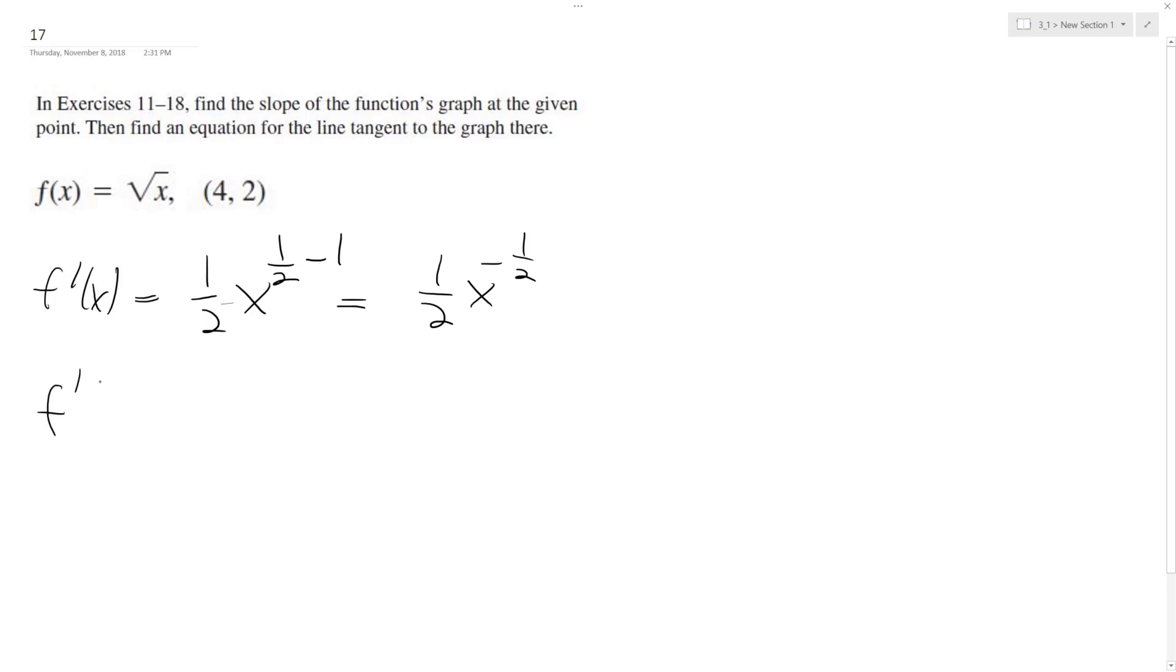Next I want to find the slope, so I plug in 4. I get 1/2 of x raised to the negative 1/2. You gotta be careful here - this is the same thing as 1/2 divided by square root of 4. So essentially this becomes 1/2 divided by 2, which equals 1/4.